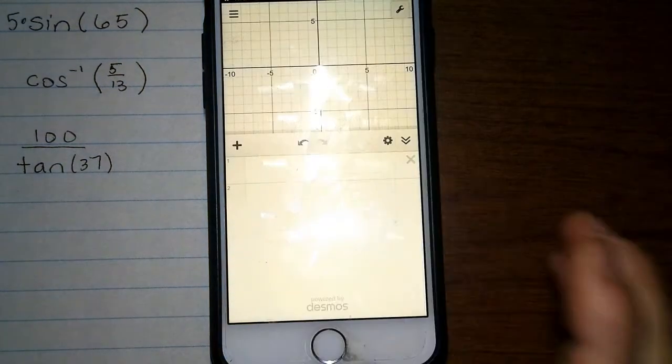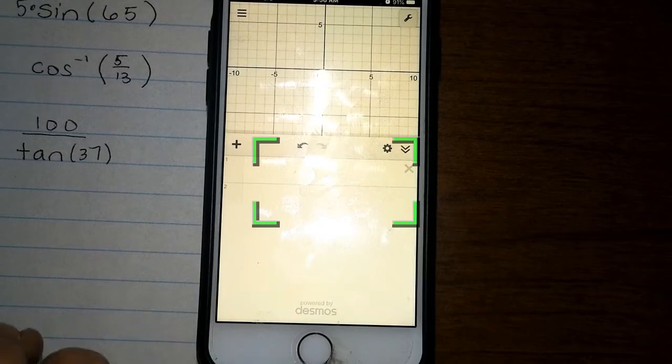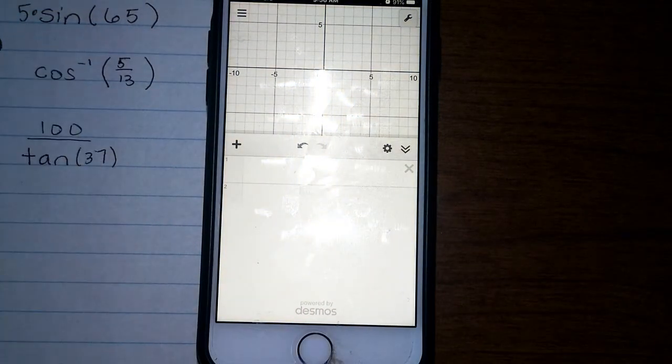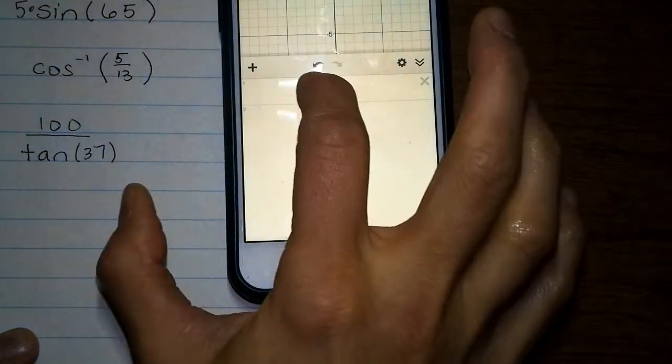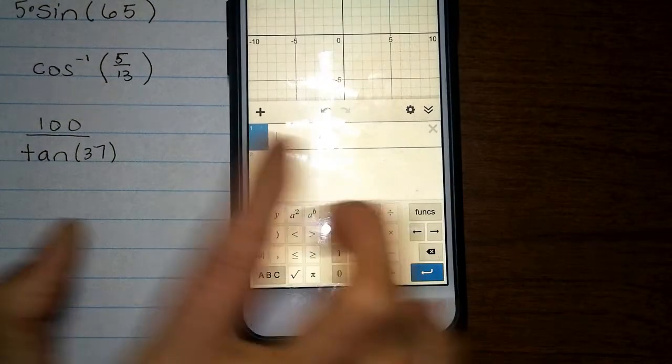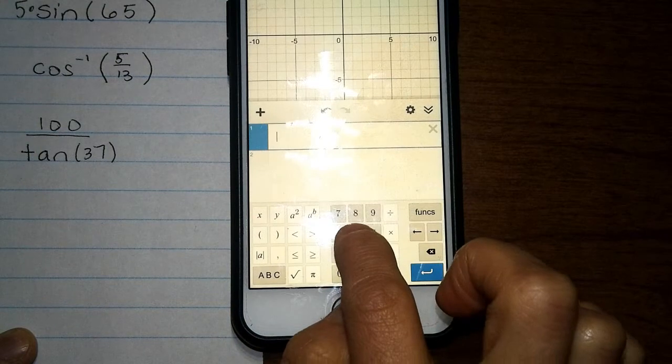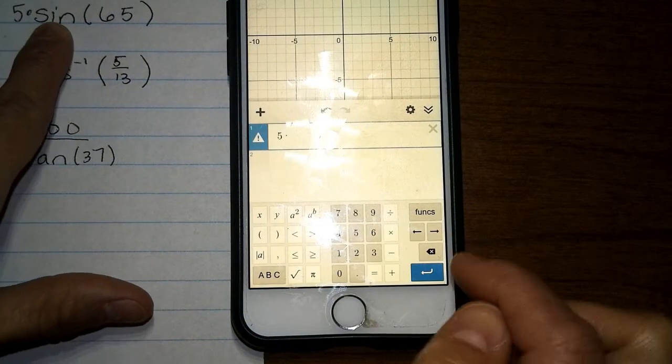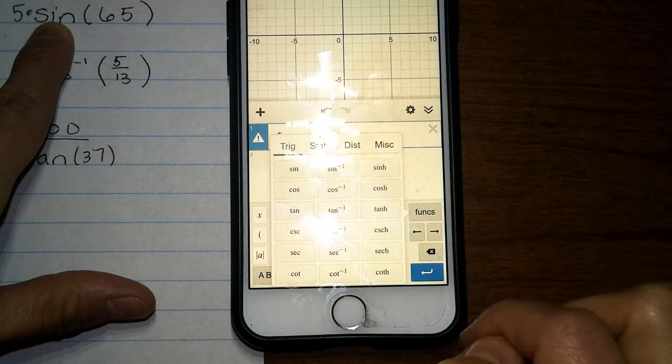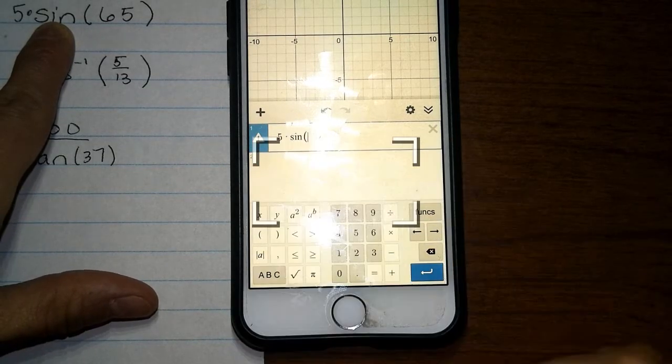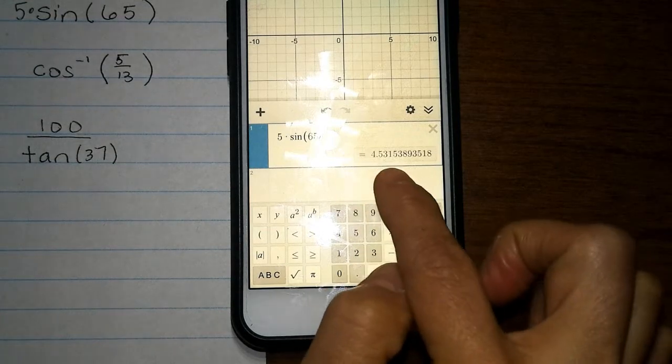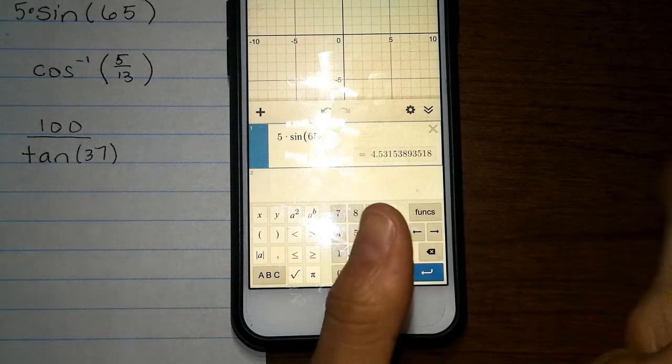Now that I have it set in degrees, I'm going to type in these three things exactly as is. If I click on a box here, I can do 5 times sine 65. To get this sine, I'm going to click on functions, and then there'll be this sine right there, and then I can say 65. And my answer will be 4.5315.